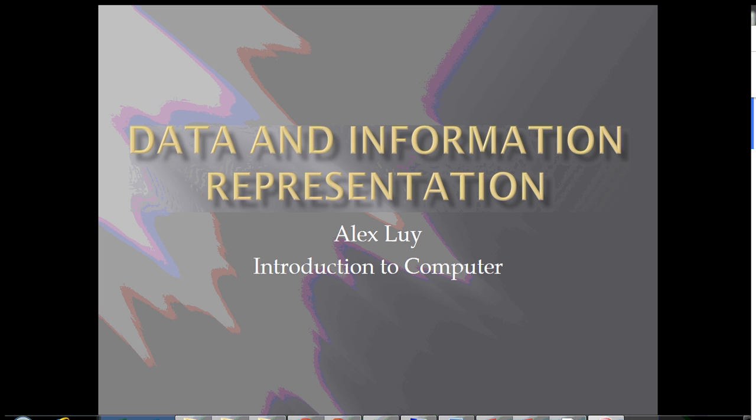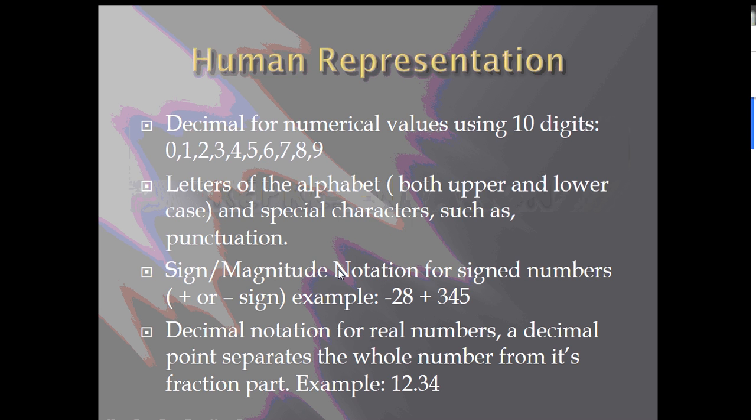As you know, computers can only read binary information. For us humans, we represent numbers in base 10, so we go from 0 to 9. Even letters of the alphabet, we represent the information using ASCII characters. And even sign magnitude, we use a negative and positive sign. This is how we represent data as humans.